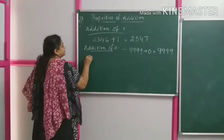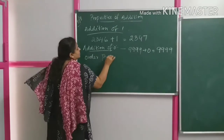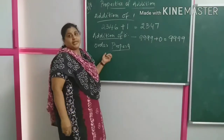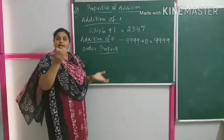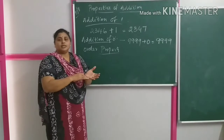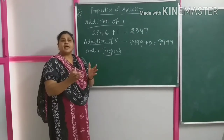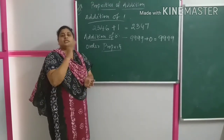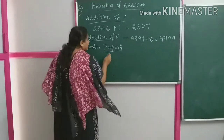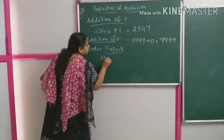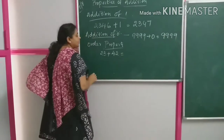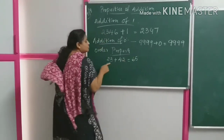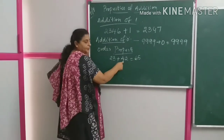The next property is the order property. Order property says: in whichever order you add up the numbers, the answer remains the same. For example, 23 plus 42 gives 65.